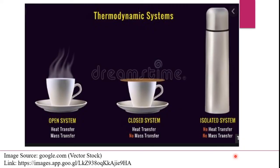From this image, you can understand what is an open system, closed system, or isolated system. Here is a cup and saucer filled with tea or coffee. In the first case, the cup and saucer with hot coffee or tea — energy is getting transferred and mass is also getting transferred in the form of vapors, making it an open system. In the closed system, the cup is closed with a lid, so only energy gets transferred and not mass. And in the isolated system, there is no transfer of energy and no transfer of mass.